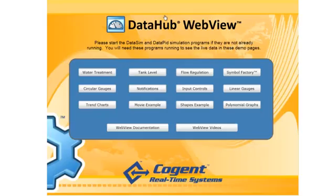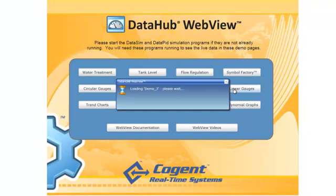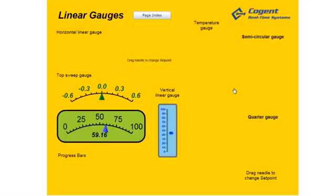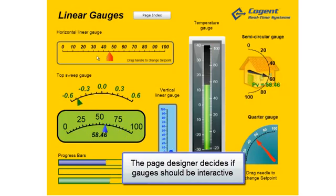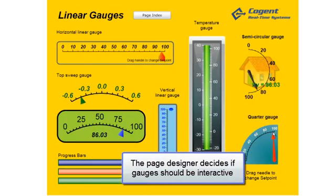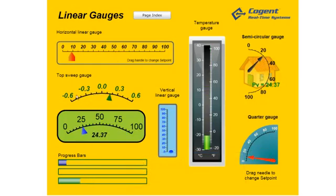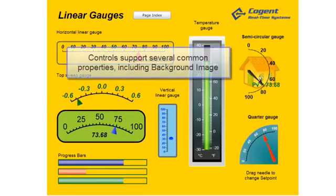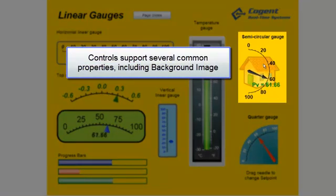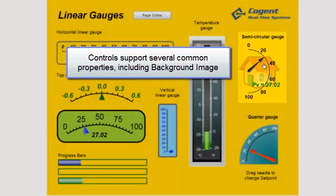I'll load the Linear Gauges page to show a few more examples of available gauges — thermometers, horizontal gauges, and progress bars. These gauges can be configured to either be interactive: I can change the setpoint or drag a handle, and as I do that, the other gauges on the page change. I can also do the same with a quadrant-style gauge. But you'll notice I can also create gauges that do not provide interaction — I cannot manipulate the vertical linear gauge or the top sweep gauge. I can also add background images to any control, such as a house added behind the semi-circular gauge.